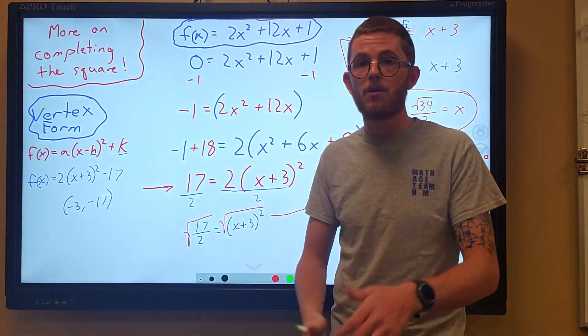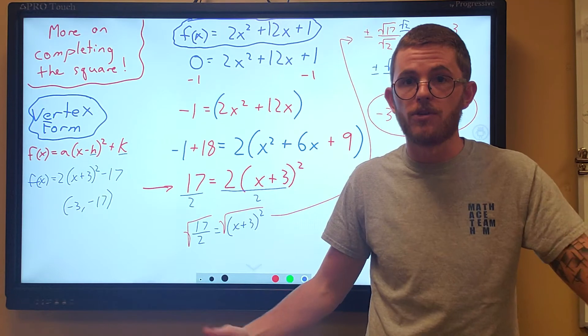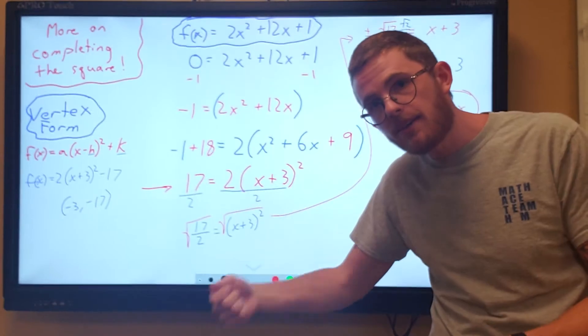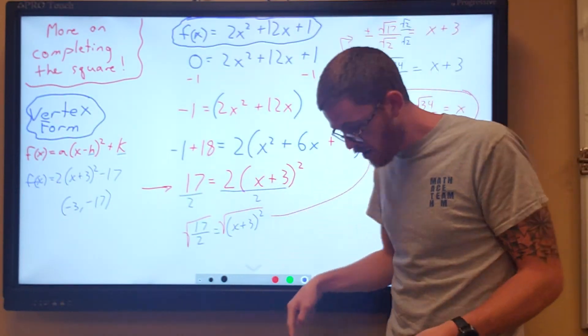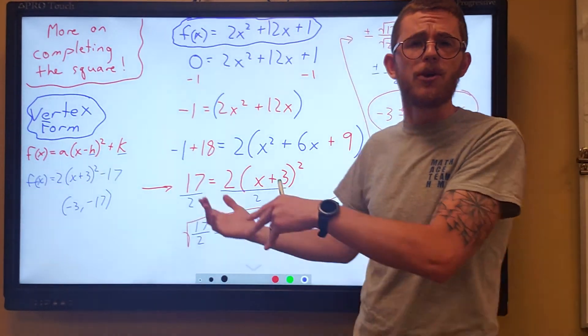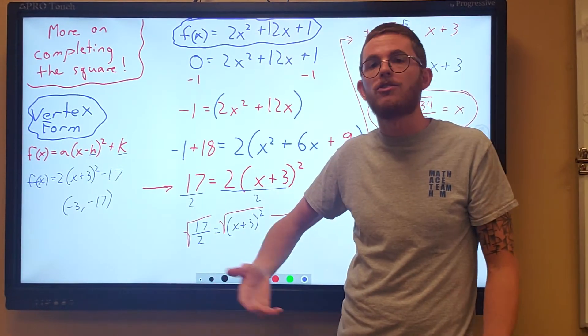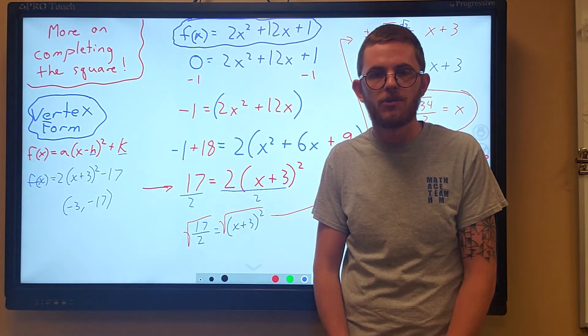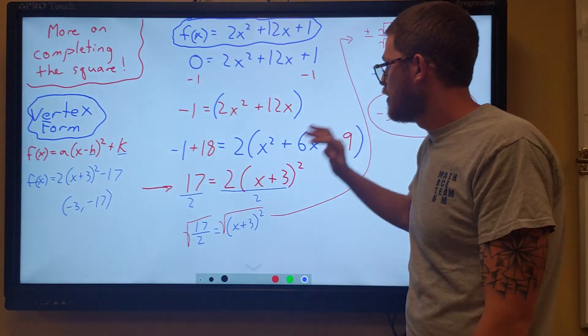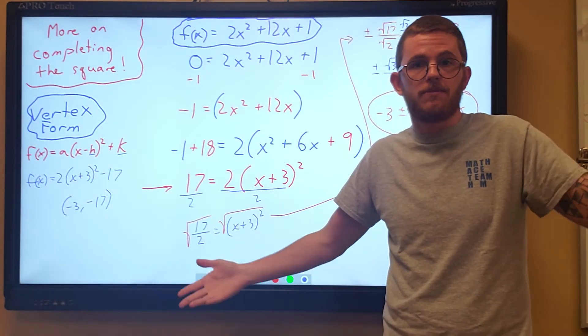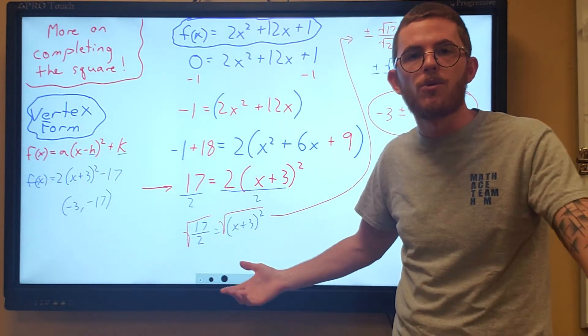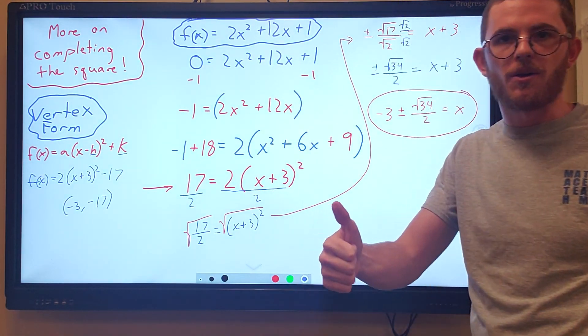So along the way, we found the vertex. There's other ways to find the vertex. We found it by using the axis of symmetry and plugging that back in. But here's one more way. And if you're solving through completing the square, then you know what the vertex is just by working through those steps. Okay, so yeah, that's... I'm just trying to give you some more examples. Alright, hopefully that helps.